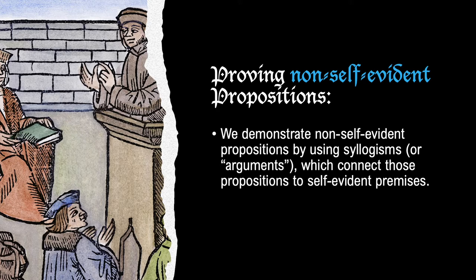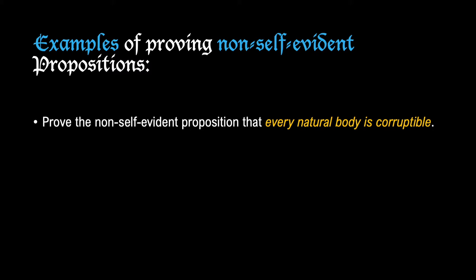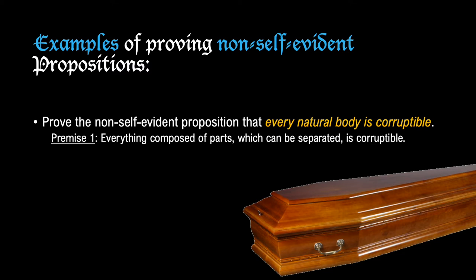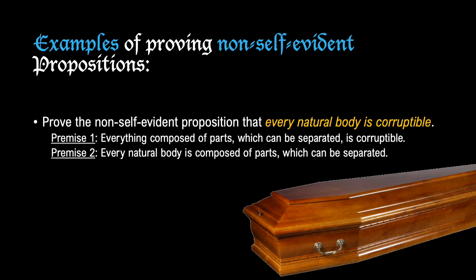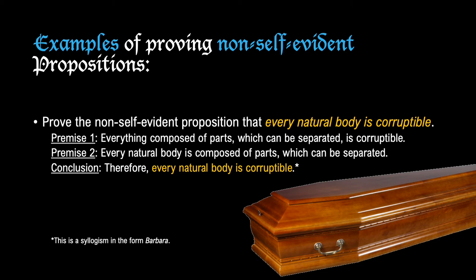Proving non-self-evident propositions is another story. We can demonstrate that non-self-evident propositions are true by relating them to self-evident propositions. For example, to prove 'every natural body is corruptible': Premise 1 — everything composed of parts which can be separated is corruptible; Premise 2 — every natural body is composed of parts which can be separated; Conclusion — therefore, every natural body is corruptible. Notice the first two premises are both self-evident, and the conclusion is non-self-evident, derived from them. This argument is taken from general natural philosophy, also known as physics.